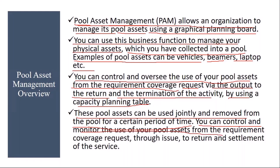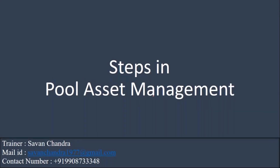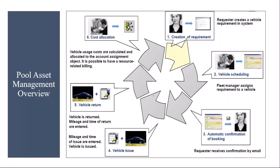You can control and monitor the use of your pool assets from the requirement coverage request through issue to return and settlement of the service. Basically you create a request for an asset from the pool, then issue that asset for the request, and once the activity is completed the asset is returned, followed by settlement. Now, the steps in pool asset management: first you will create a requirement — suppose you have 20 vehicles as a pool and you need one.